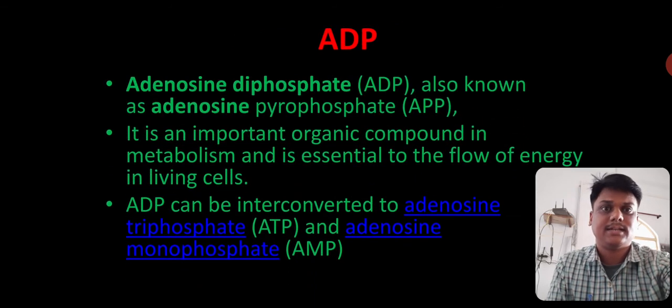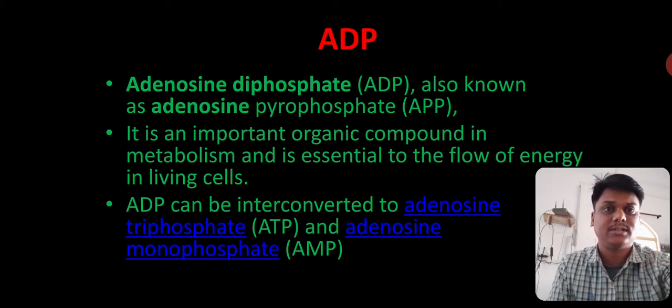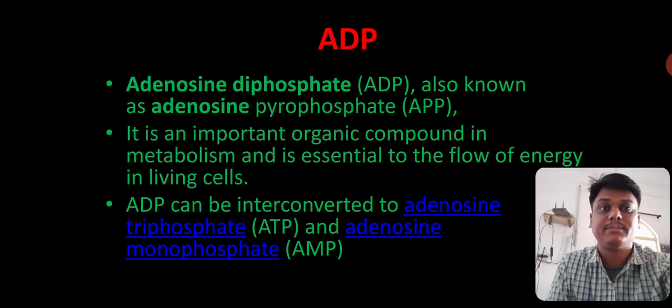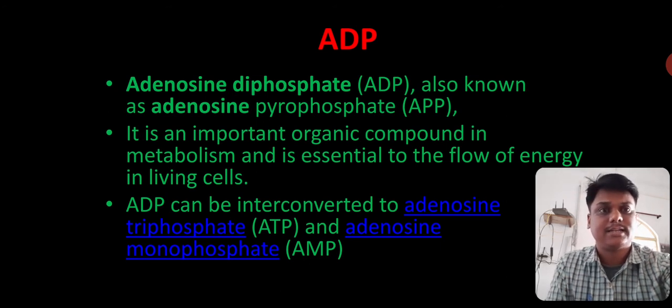Next, that is ADP. ADP is known as adenosine diphosphate. It is also known as adenosine pyrophosphate, that is APP. It is an important organic compound in metabolism and essential to flow of energy in living cells. ADP can be converted to adenosine triphosphate and adenosine monophosphate. So it is an intermediate compound while conversion from ATP into ADP and then into AMP.